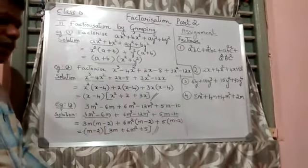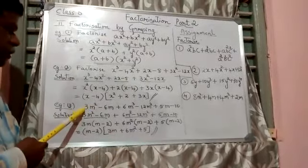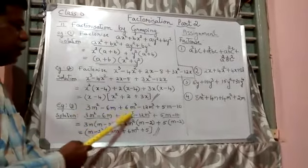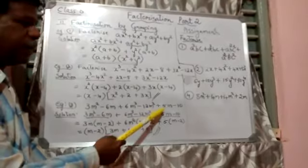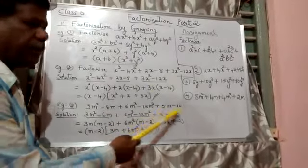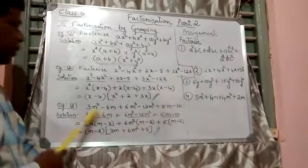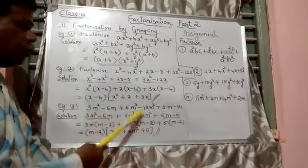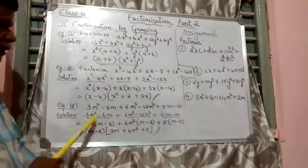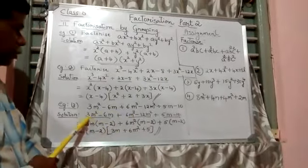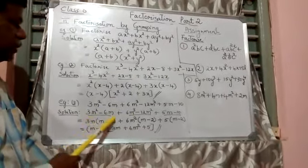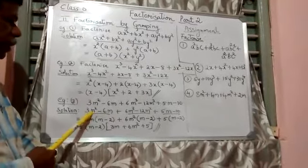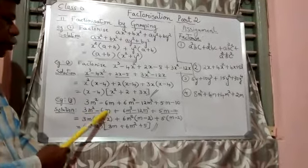The third example has six terms: 3m² minus 6m plus 6m³ minus 12m² plus 5m minus 10. Again, like the earlier one, groups of two terms each. In the first group, 3m² minus 6m — 3m is common. Take it out. m minus 2 remains.